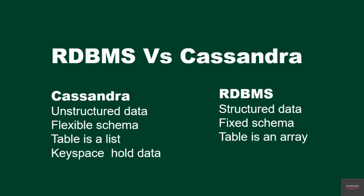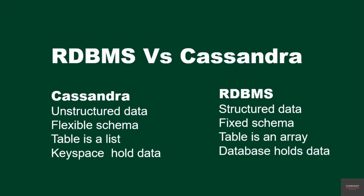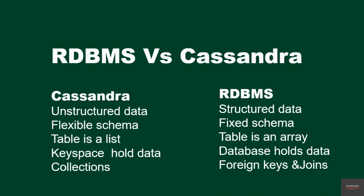In Cassandra, the data is held in key spaces, whereas in a relational database the data is held in a database. In Cassandra, relationships are represented using collections, while in a relational database management system, you represent relationships using foreign keys and table joins. In Cassandra, a row is a unit of replication, while in a relational database, a row is an individual record.